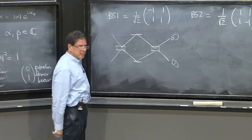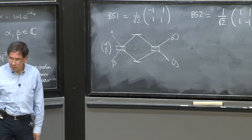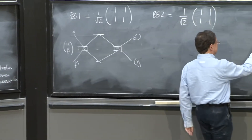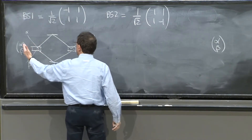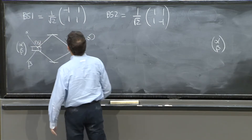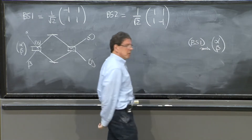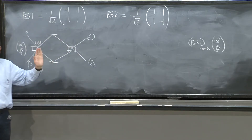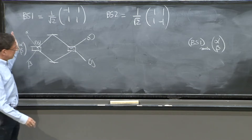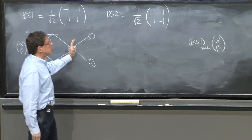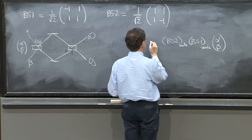Let me assume, for example, that I put the state alpha beta in. What do I get out? The state comes in and is acted on by beam splitter 1. You must put the beam splitter 1 matrix. Then it comes to mirrors — let's assume mirrors do nothing; the two mirrors multiply by minus 1, which has no effect. Then you get to beam splitter 2 and multiply by the matrix of beam splitter 2. That's the output.